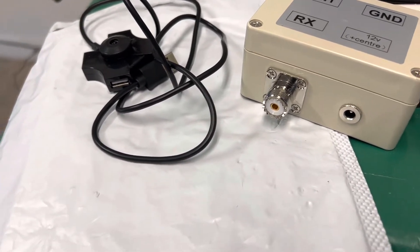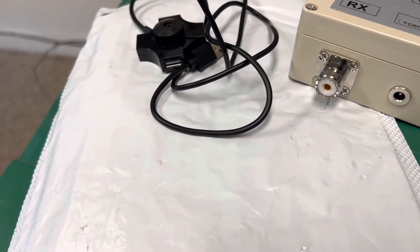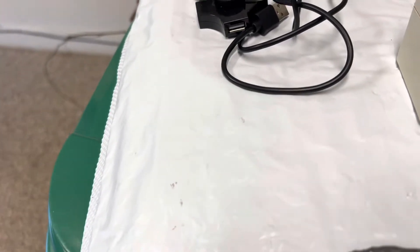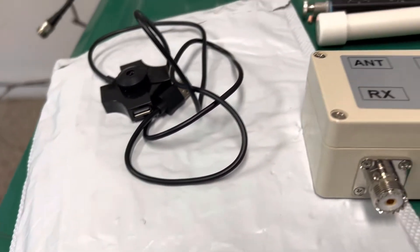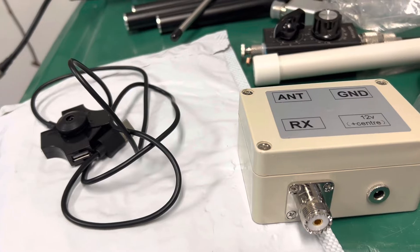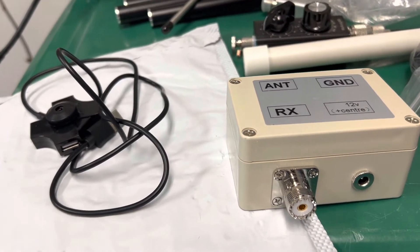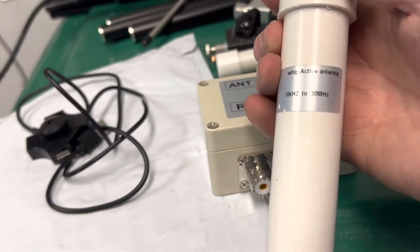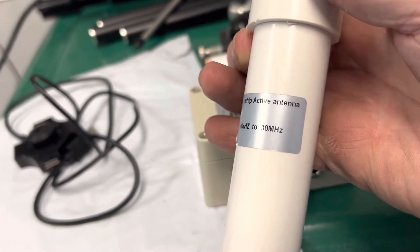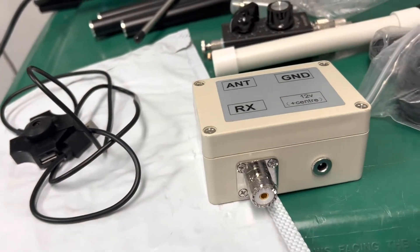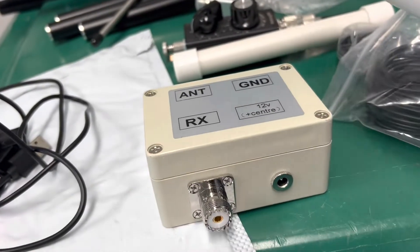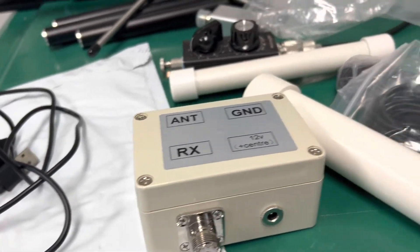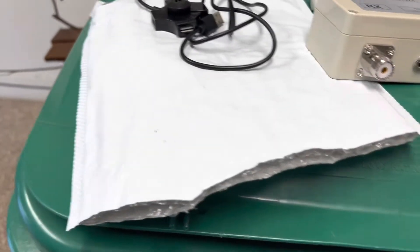That's what you get when you order a Chinese clone of a whip active antenna. 10 kilohertz to 30 megahertz. And I believe, like I said, I believe this is a knockoff of the Ed Fong. If somebody can correct me in the comments below, I believe that's what it is.